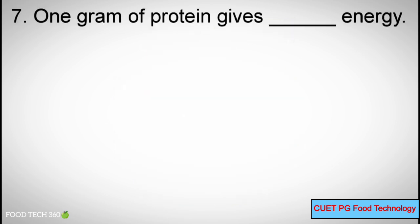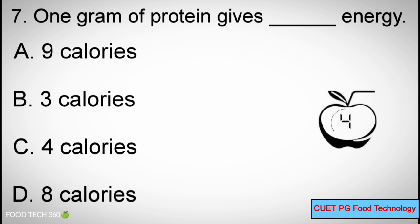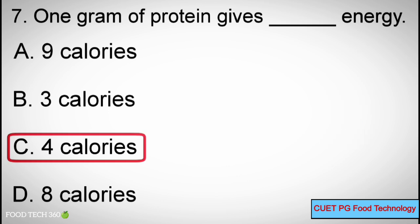Question number 7. 1 gram of protein gives how much energy? Options: A. 9 Calories, B. 3 Calories, C. 4 Calories, D. 8 Calories. Correct answer: C. 4 Calories.